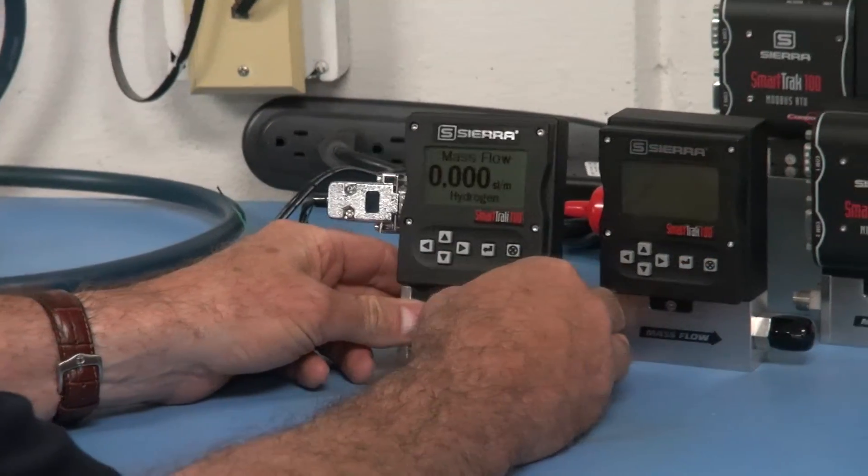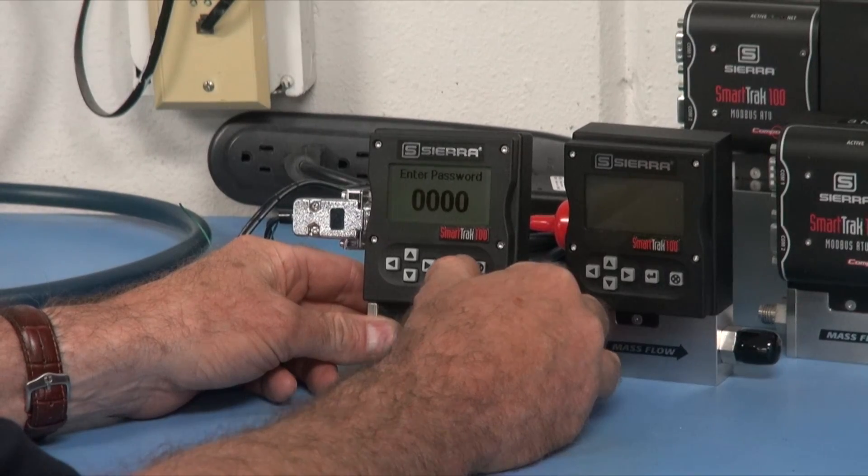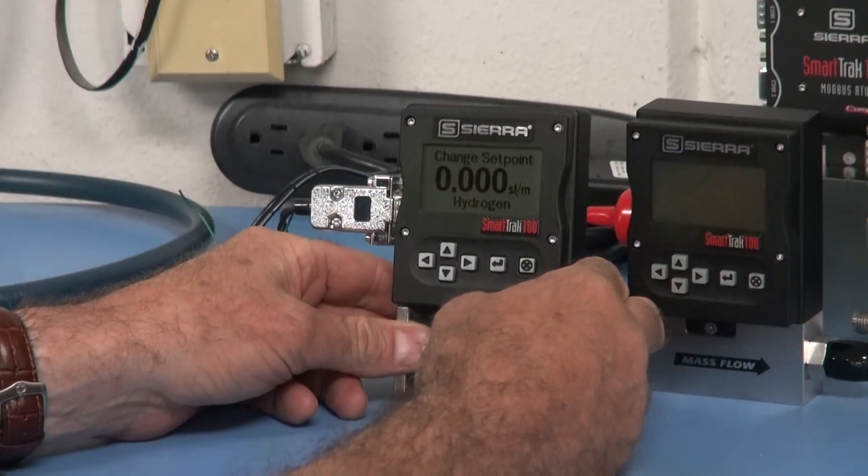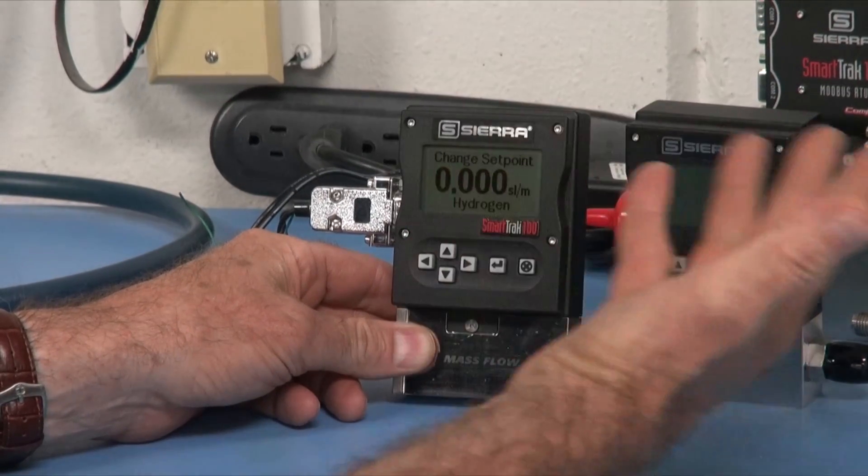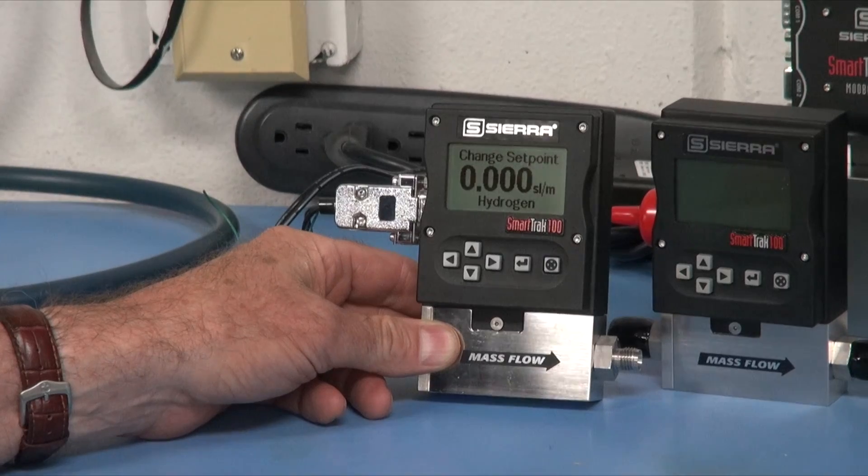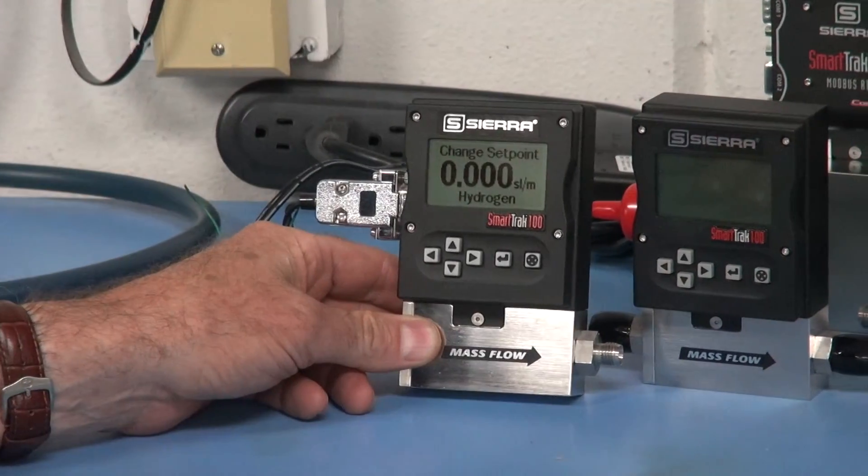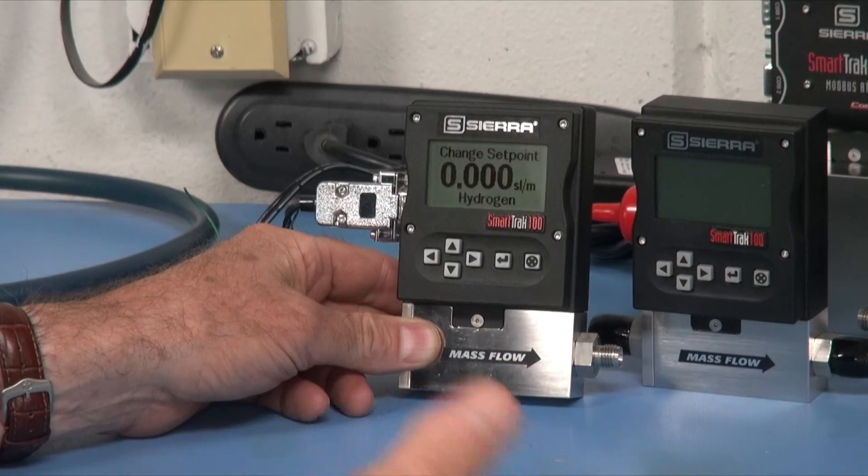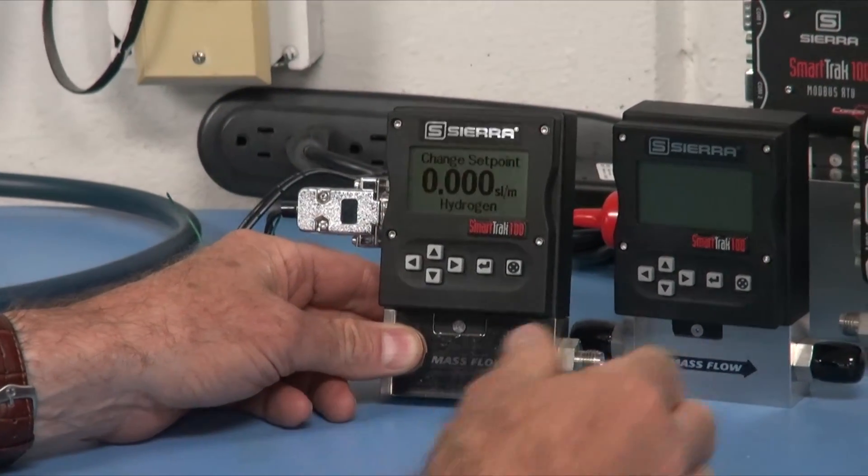So we press enter, ask for a password so it can be protected, and then we have change set point. When I want to set this up to flow two liters a minute or five liters a minute, I'll press enter and change the numbers on the screen. Then just press the button again, and away it goes to that flow rate immediately. Within a few seconds you're flowing exactly what you asked for.